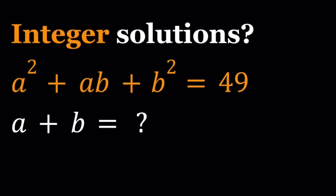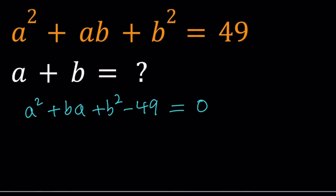Let's take a look at this equation. First of all, notice that a and b are both squared, so this could be considered a quadratic equation. Let's write it as a quadratic in a: a squared plus ba plus b squared minus 49 equals 0. So a squared and a are the terms with the variable, and b squared minus 49 would be considered a constant.